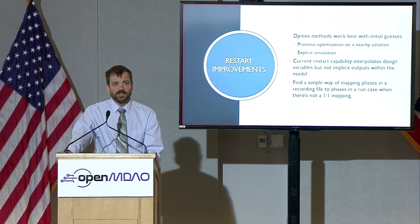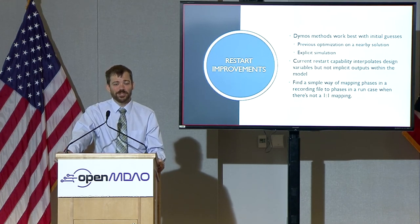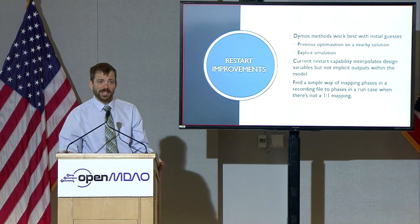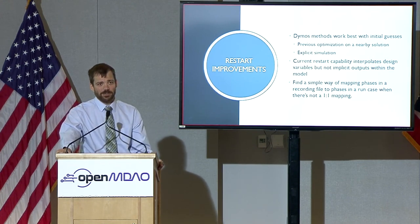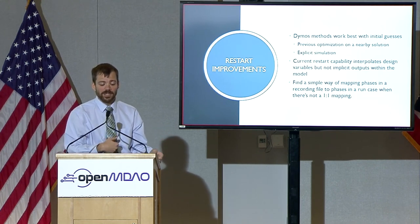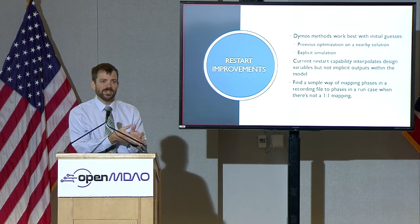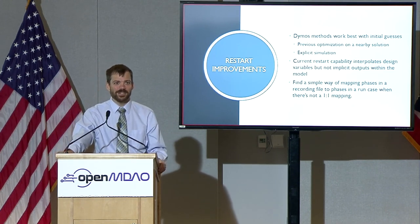Restart improvements. Dymos methods work best with good initial guesses, and my colleagues don't like to hear this because people want something where they don't have to mess with it. That's difficult to do, especially in trajectory optimization with a lot of variables. Some ways we do this: take a previous solution, load the case recorder file from that previous solution that OpenMDAO generates, and start from there. Explicit simulation is another option — run Dymos in simulation mode so you have a physical trajectory that follows your control history. For the pseudo-spectral methods, that satisfies a lot of constraints and makes the optimizer much happier.